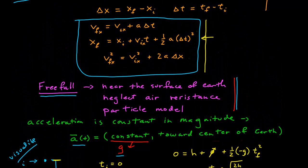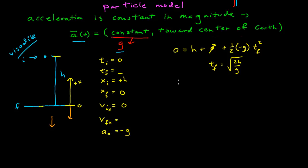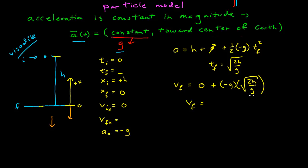Now that I have the time, let's find the final velocity. I need the time in this expression. Now that I have the time, I know the acceleration, and I know the initial velocity, so I can find the final velocity. The final velocity equals the initial velocity (which is 0) plus the acceleration (negative g) times the time (the square root of 2h over g). So the final velocity equals negative square root of 2gh.